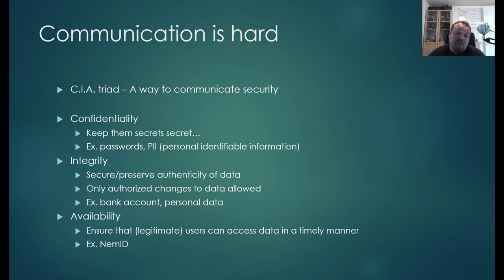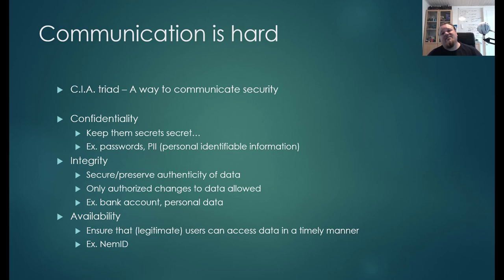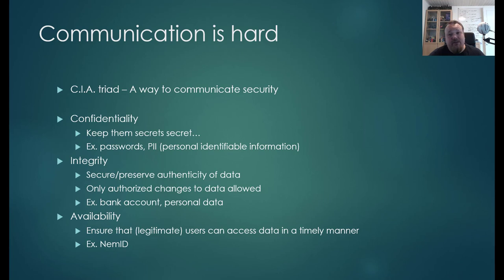Availability is about ensuring that users can access data in a timely manner — legitimate users only. If your server has a breakdown, you need to make sure data is still accessible. How would you ensure your users can access the system if you're under a DDoS attack? Availability is very important: if you have no availability, you don't need confidentiality and integrity, because nothing is available — your system is down.